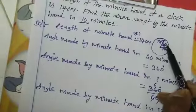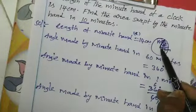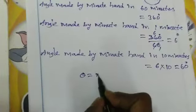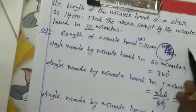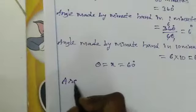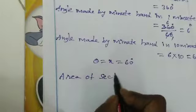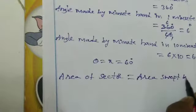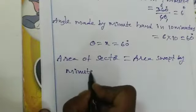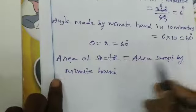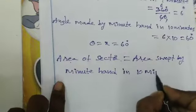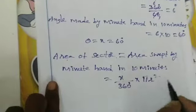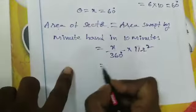The minute hand sweeps out a sector shape in 10 minutes, with theta equal to 60 degrees. The area of the sector formula is: Area = (θ / 360°) × π r². This gives us the area swept by the minute hand in 10 minutes.